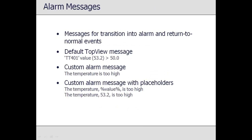Once the alarm occurs, and optionally when the alarm returns to normal, Top View will generate a message describing the condition. The default message describes the condition and the violation, although the user can override this with a custom message to provide more meaningful information. Through the use of placeholders, the custom alarm message can include the value and details of the monitor point or other points.